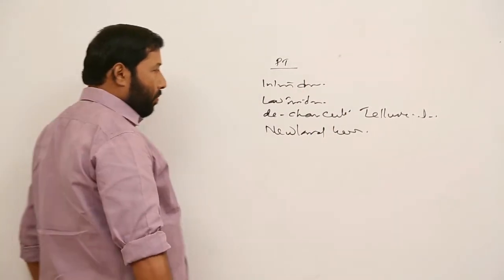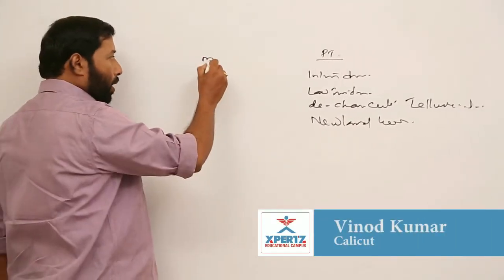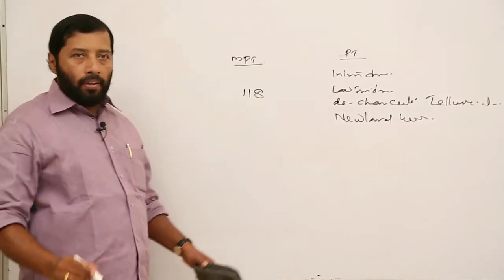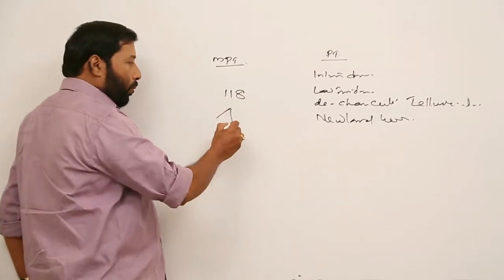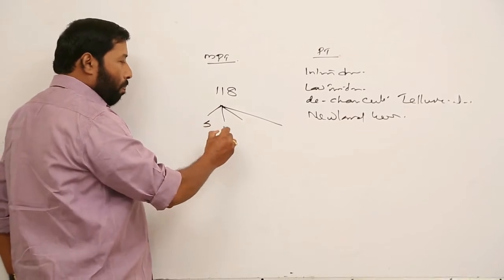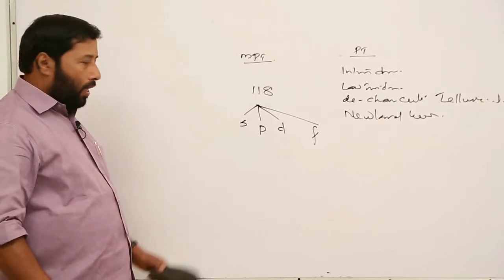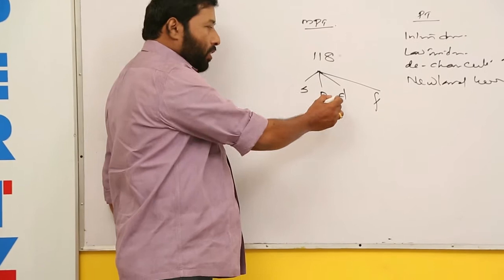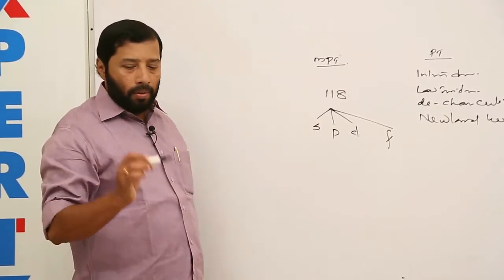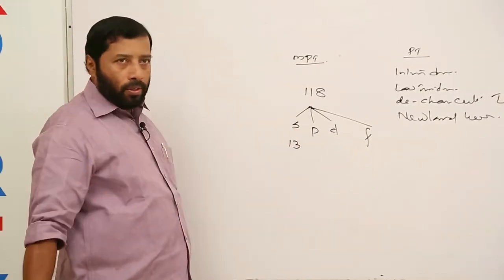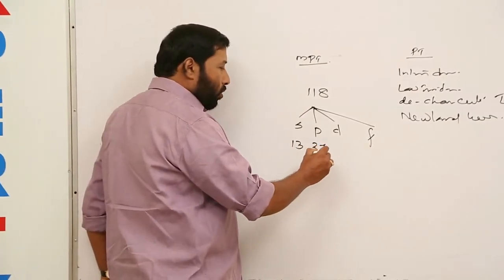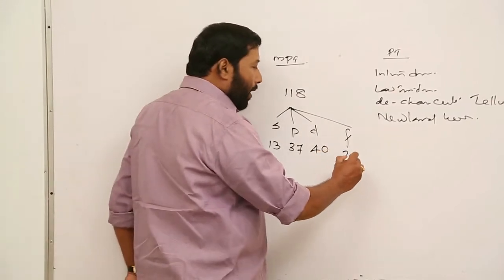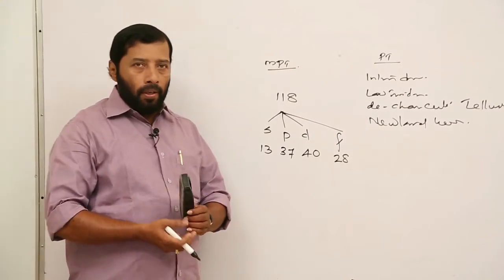Today we are going to explain the modern periodic table. There are a total of 118 elements present in the modern periodic table. They are categorized into four blocks: S block, P block, D block, and F block. The letter S stands for sharp, P stands for principal, D stands for diffuse, and F is fundamental. Only 13 members belong to S block, 37 members belong to P block, 40 members in the D block, and finally 28 in F block.